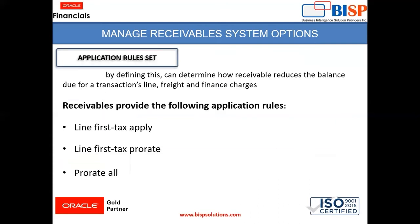The next term is Application Rule Set. By defining this, one can determine how receivable reduces the balance due for a transaction line, freight, and finance charges. There are three types of application rule sets available in the instance: Line First Tax Apply, Line First Tax Pro Rate, and Pro Rate All.